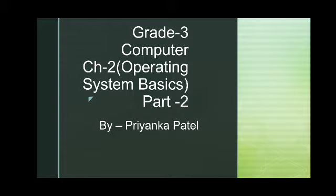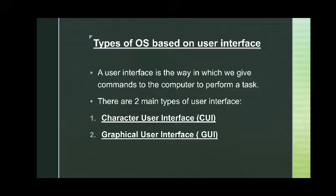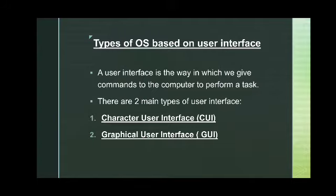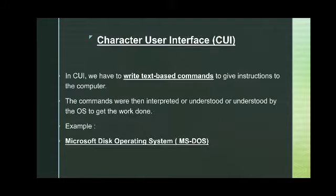In today's session we will learn about the types of operating system based on user interface, and Windows operating system. User interface is the way in which we give commands to the computer to perform a particular task. There are two main types of user interfaces: first is Character User Interface, that is CUI, and second is Graphical User Interface, that is GUI.